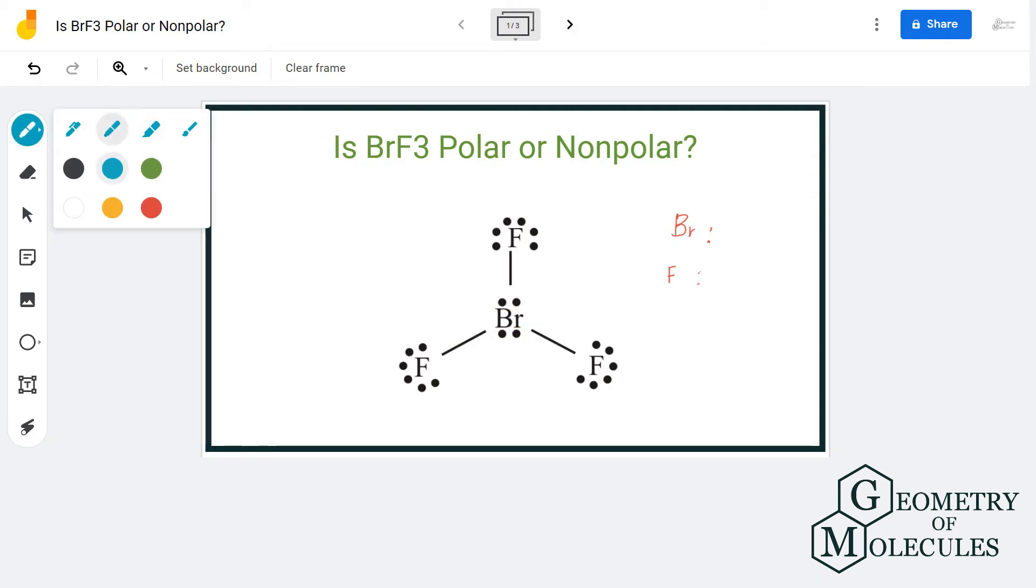The electronegativity of fluorine is much higher than bromine as it has an electronegativity value of 3.98 whereas for bromine it's 2.96. So the difference is more than 0.5 which makes this bond polar. Apart from that there are two non-bonding pairs of electrons on the central atom.